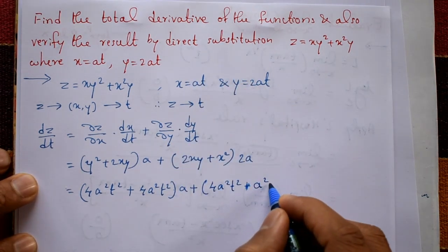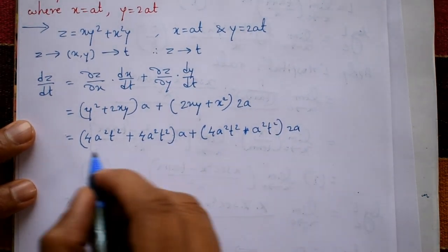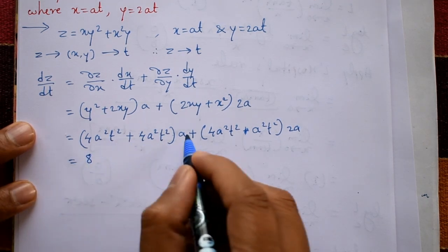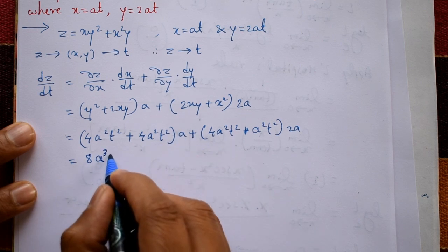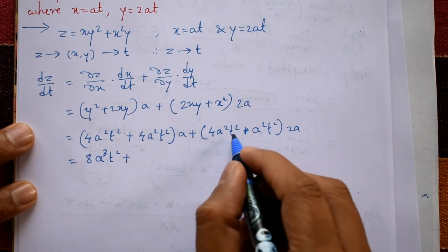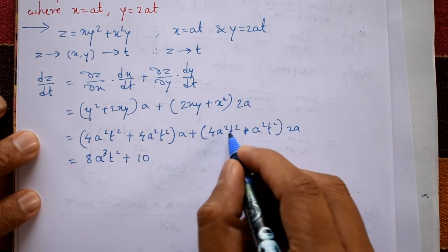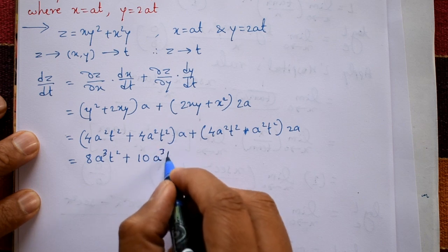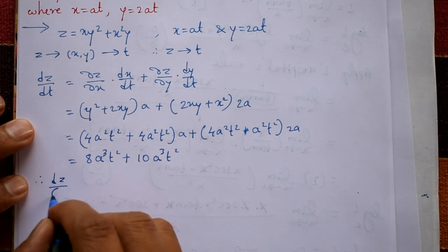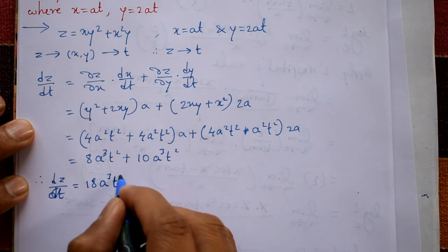Opening the brackets: a·(4a²t² + 4a²t²) = 8a³t², and (4a²t² + a²t²)·2a = 5a²t²·2a = 10a³t². Adding: 8a³t² + 10a³t² = 18a³t². Therefore dz/dt = 18a³t².